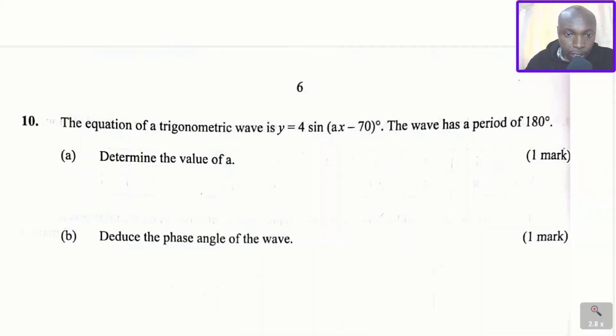Question number 10. The equation of a trigonometric wave is given by y equals 4 sine of ax minus 70 degrees. The wave has a period of 180 degrees.